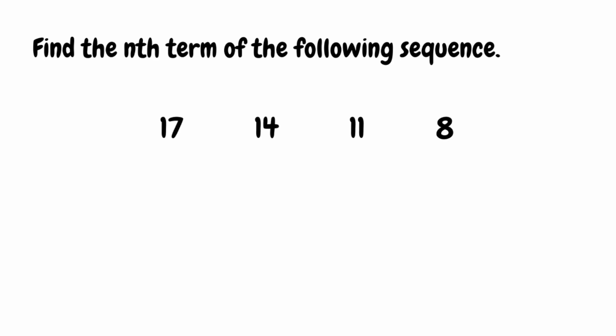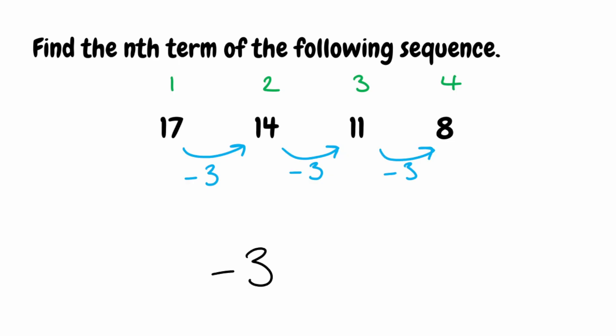For this final example, we want to find the nth term again. I'm going to label the term numbers: 1, 2, 3, and 4. The first four terms of this sequence are 17, 14, 11, and 8. The sequence is actually getting smaller this time. From 17 to 14, we're taking away 3. From 14 to 11, we subtract 3 again. And from 11 to 8, we subtract 3 again. We have a common difference, so it's a linear sequence. Because we've got a negative this time — we're taking away from term to term — we're going to have negative 3 in front of our n.